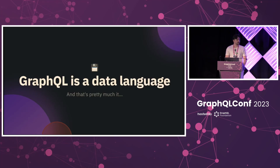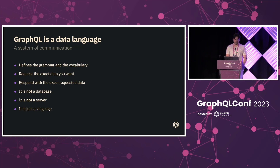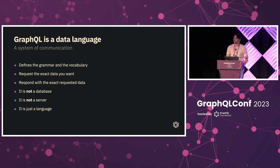So what is GraphQL? In the simplest terms, GraphQL is a data language — literally, nothing more, nothing less. It is a system of communication that defines the grammar and the vocabulary. It helps you describe and request the exact data you want and also helps the server fulfill that request. Like in the real world, those that know the language can communicate. Please keep in mind that GraphQL is not a database, it's not a server — it is simply just a language.